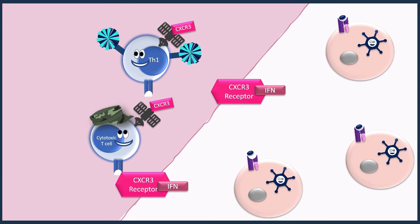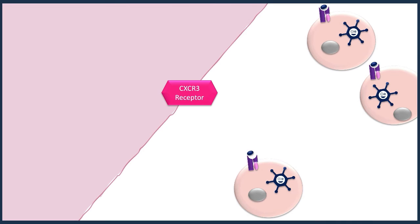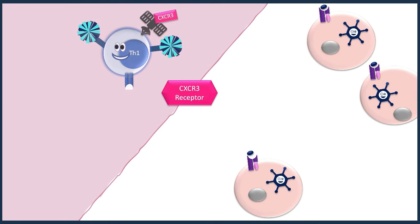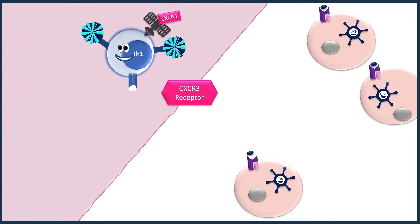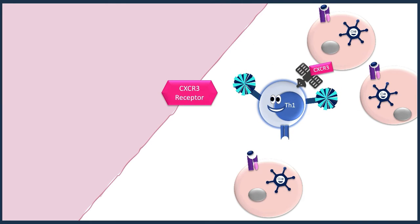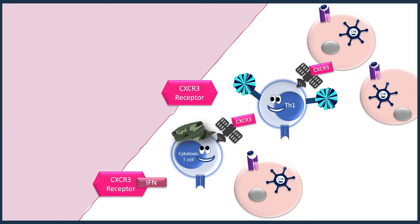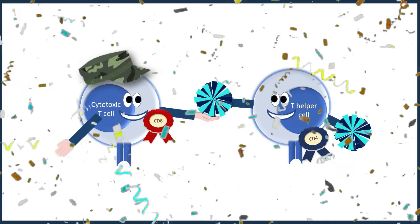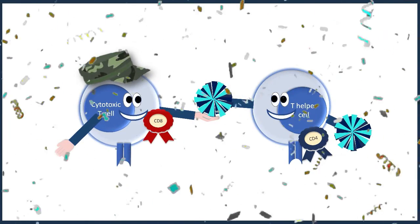Interferon can be produced by most cells in our body in response to infection, but a few tissues are particularly good at this, such as the lung and the gut. The CXCR3 homing device is used by both CD4 and CD8 T-cells, and not uncommonly this will occur in sequence. For example, Th1 T-helper cells might travel to the tissue using CXCR3, and when they arrive they themselves secrete lots of interferon, which further increases CXCR3 receptors in the area and attracts CD8 T-cells — another example of the harmony between T-helpers and cytotoxic T-cells.